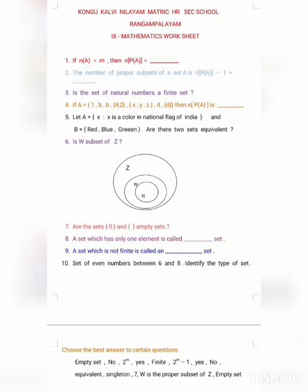First one, if N of A equal to M, then N of P of A equal to dash. Second one, the number of proper subsets of a set A is N of P of A minus 1 equal to dash. Students, for the first and second question answers, you watched the video; the last part covered the properties. Third one,